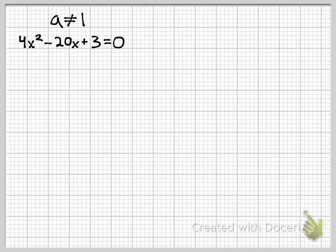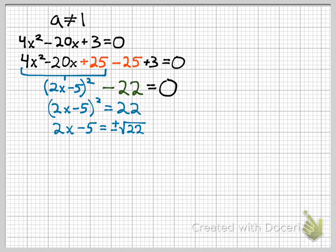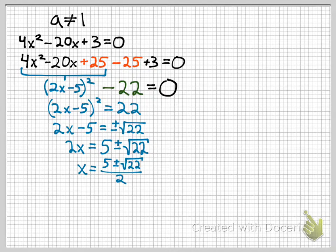The case is when a is not 1, you get something like this. Now we complete the square, then we square root both sides, and then we solve for x. Remember, those are two different equations.